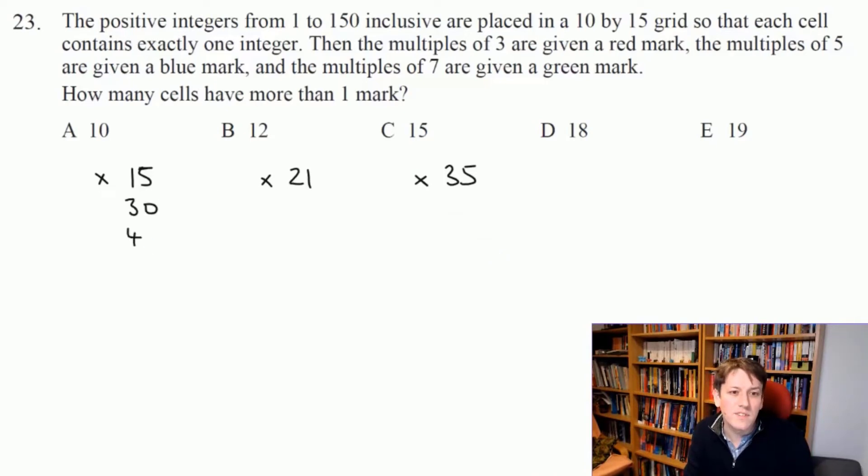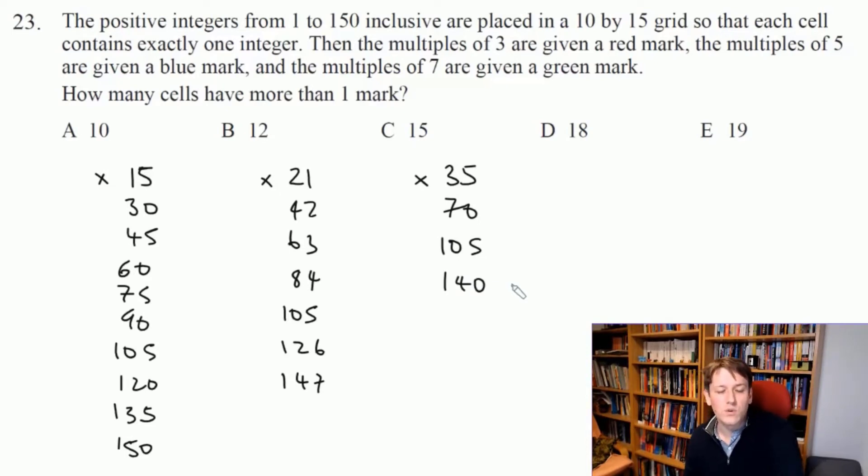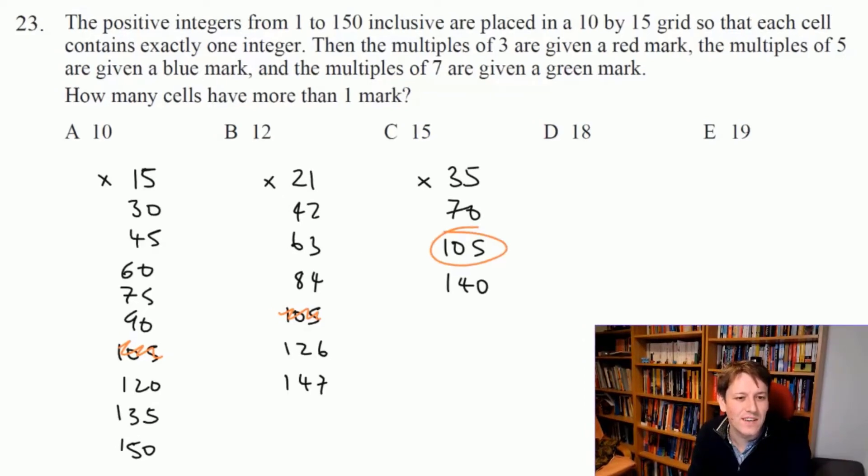We can write these down quickly: 15, 30, 45, 60, 75, 90, 105, 120, 135, and 150 all get two marks. 21, 42, 63, 84, 105, 126, and 147 will all have two marks. And 35, 70, 105, and 140 will also all have two marks. I've just got to be careful that I don't over count these because 3 times 5 times 7 is 105, and that's going to be in all three of these lists. So I'm just going to count these up: 1, 2, 3, 4, 5, 6, 7, 8, 9, 10, 11, 12, 13, 14, 15, 16, 17, 18, 19. And the answer is E, 19.